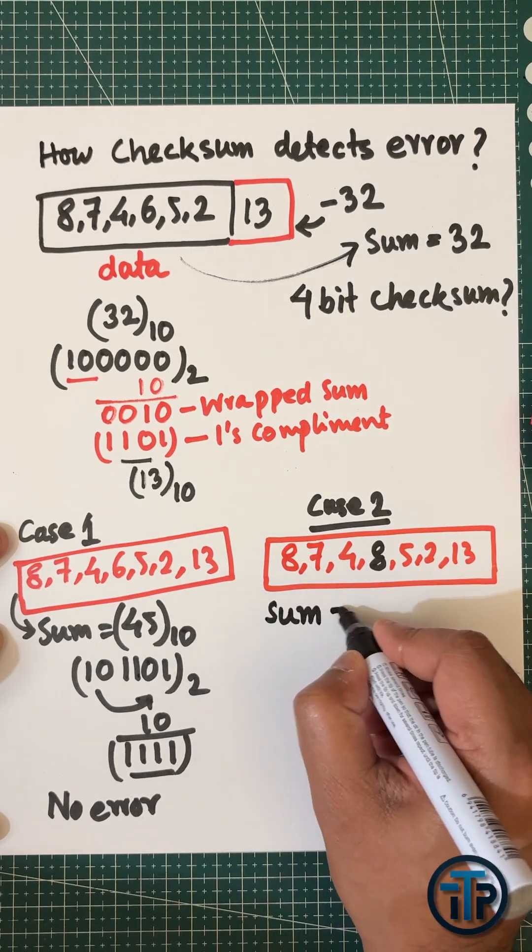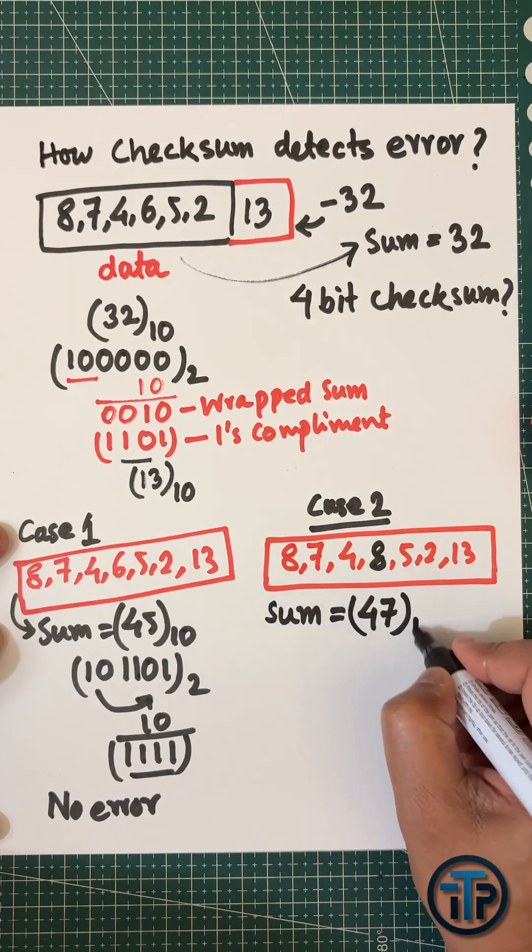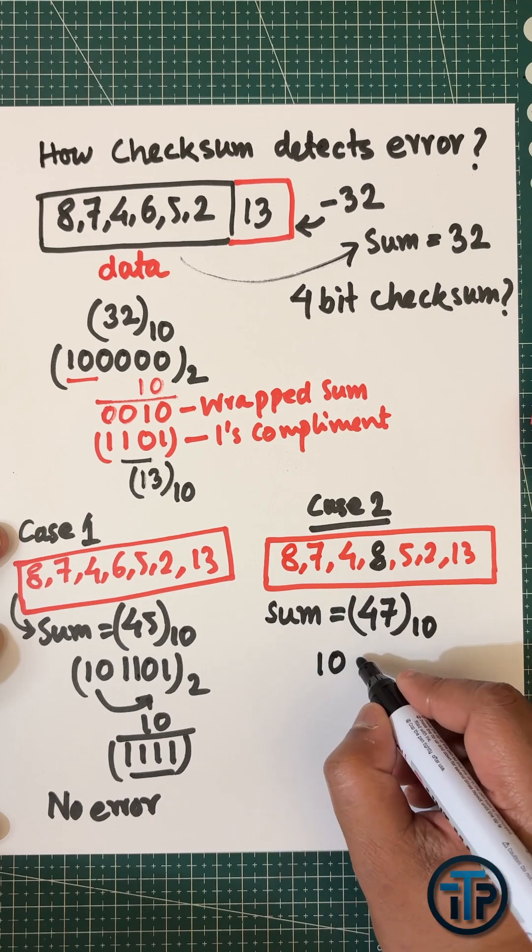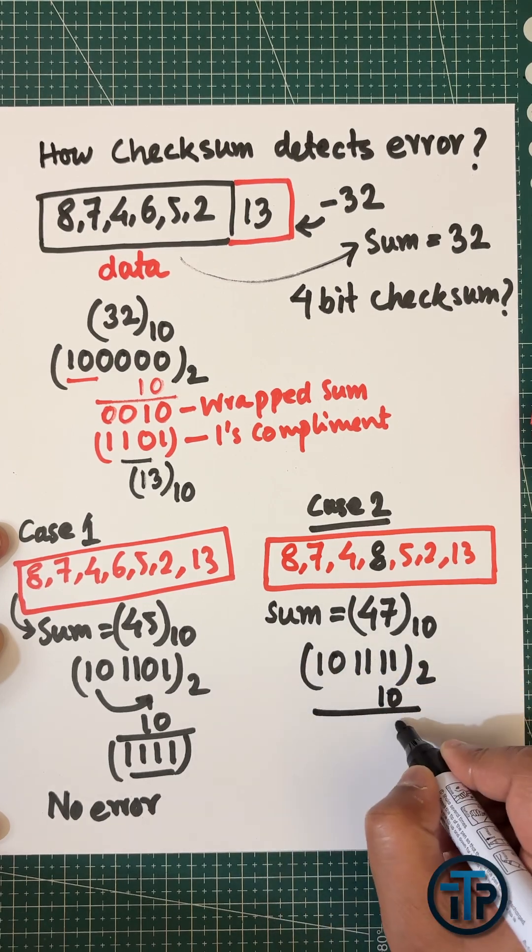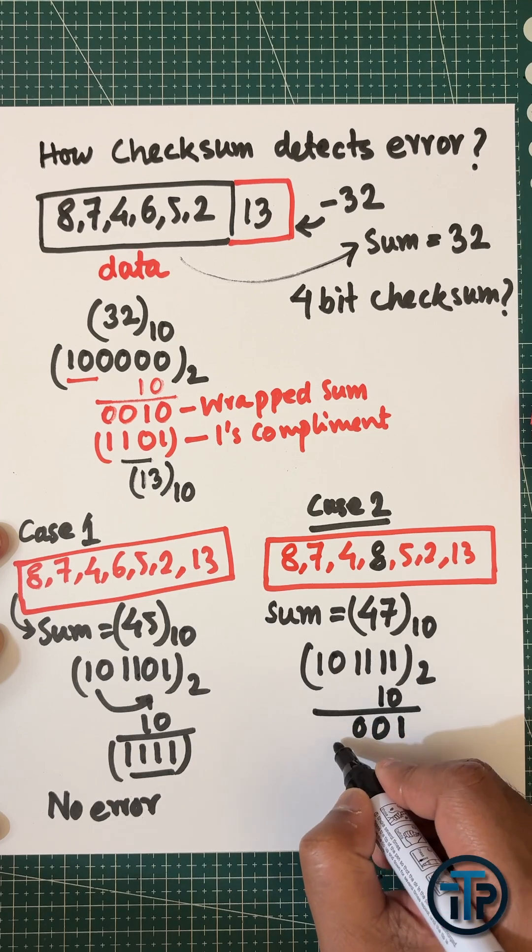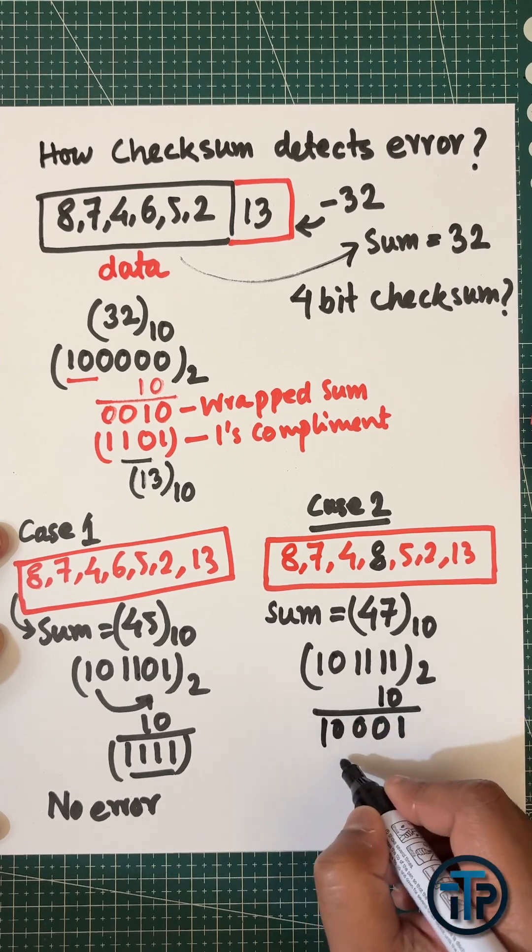In binary, 47 is 101111. After the wrap sum, we get 100001, and wrapping again gives 00010.